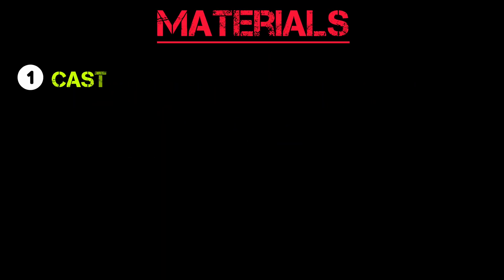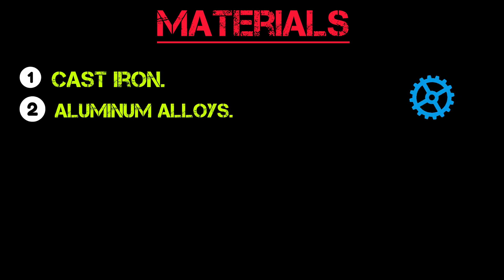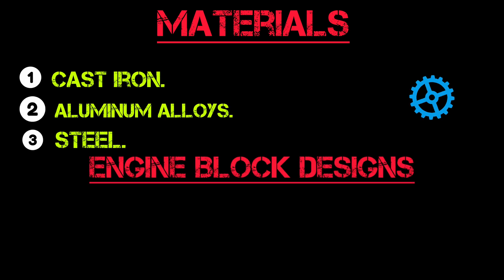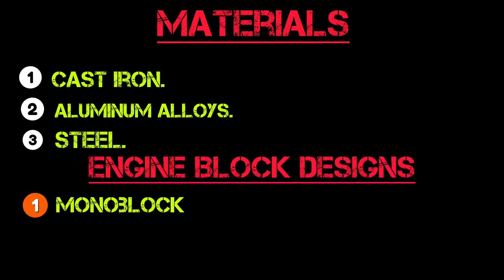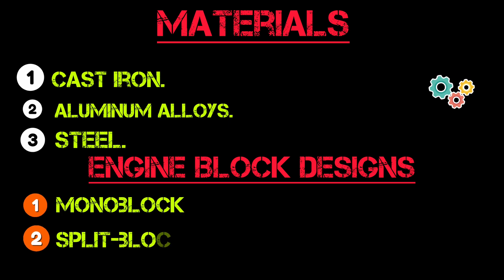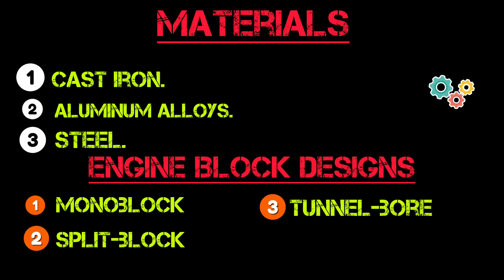Materials: One, cast iron. Two, aluminum alloys. Three, steel. Engine block designs: One, monoblock, single piece. Two, split block, two piece. Three, tunnel bore, with cylinders connected.